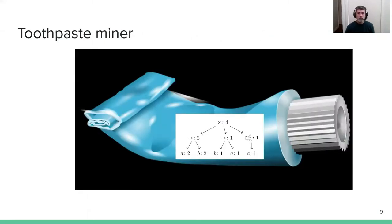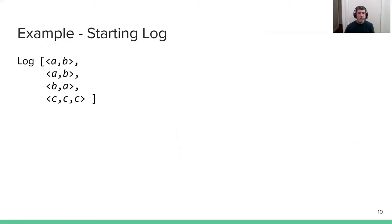We came up with a framework of techniques we call the toothpaste miner. I'll go through an example to explain what we mean by that. Let's look at an example of the toothpaste miner working. If we start with this example log where we've got two similar traces which are A, A, B, we have another trace with two activities in a different order, B first then A, and we have these repeated C activities.